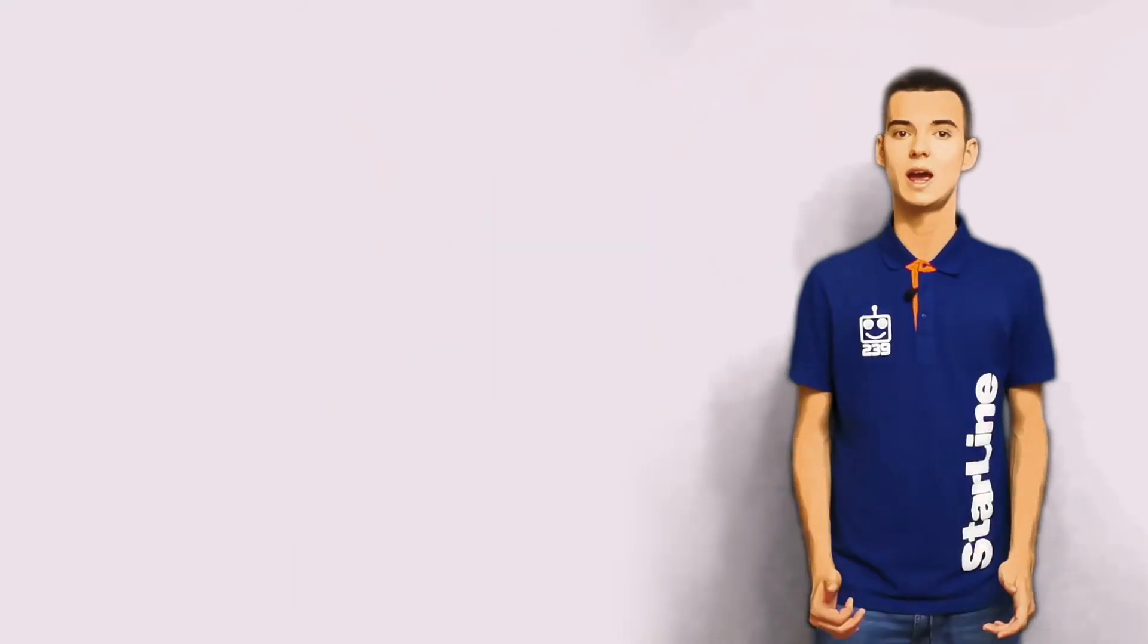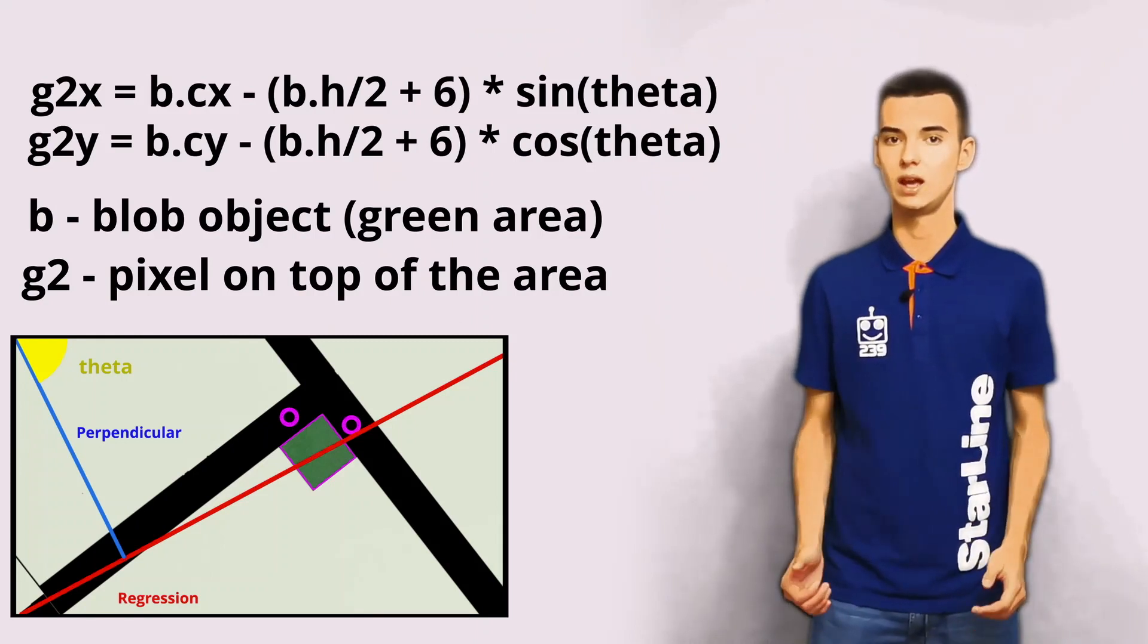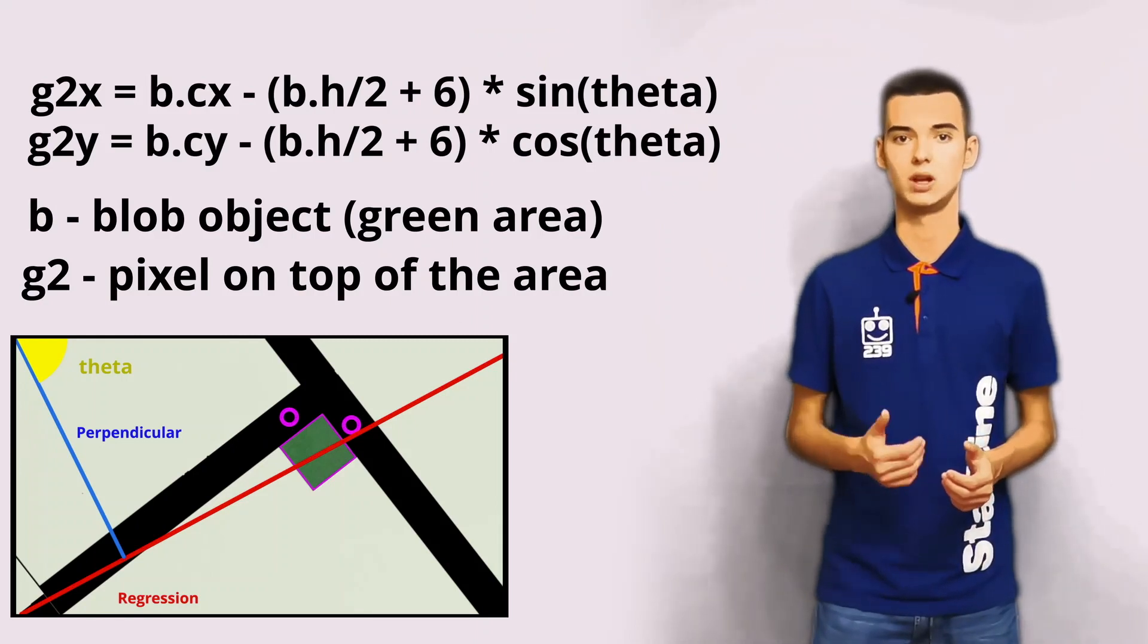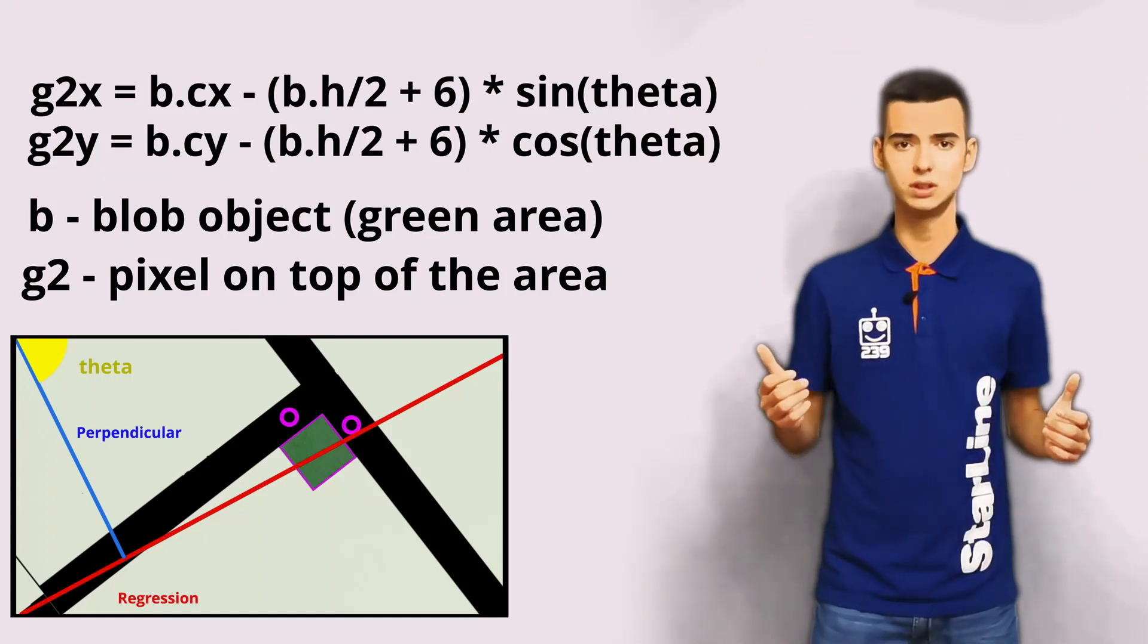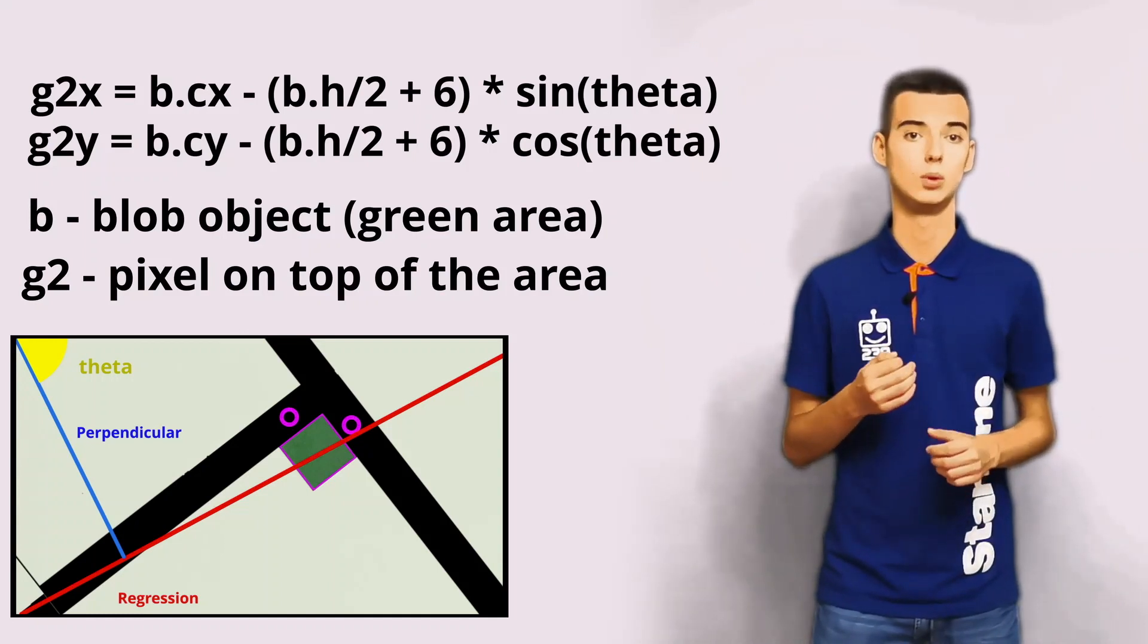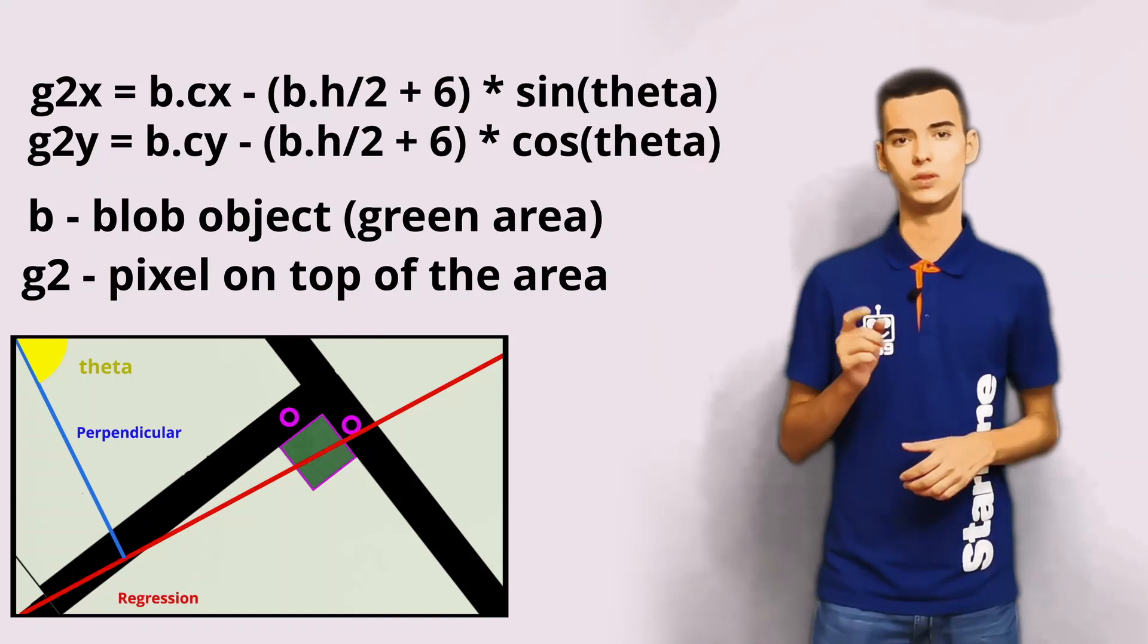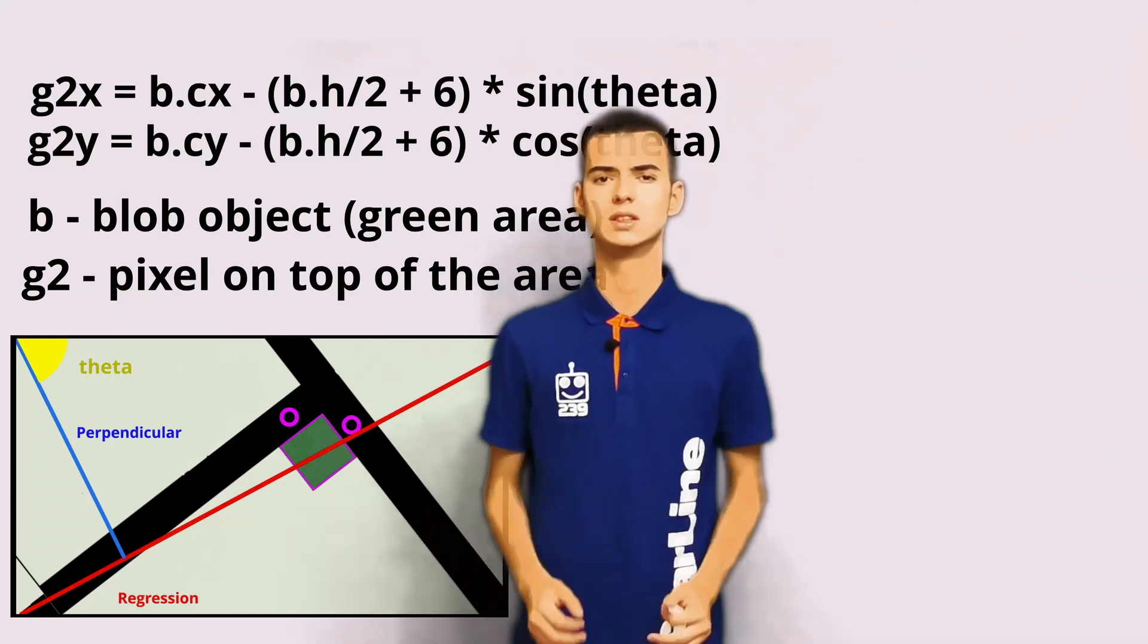To correct the angle error, I'm using the linear regression algorithm I talked about earlier. It returns an angle between x-axis and a perpendicular to the line created by the algorithm. After that, I can fix the coordinates of pixels the color will be read from with these trigonometric formulas.